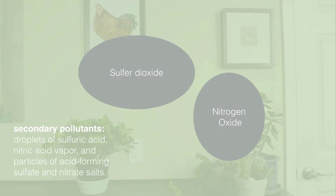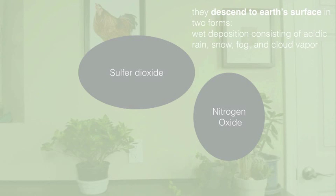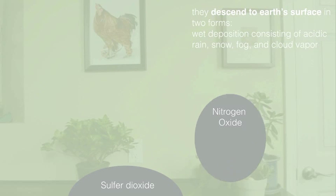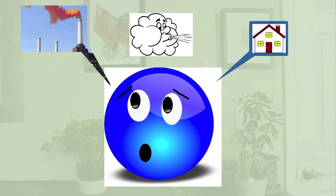During their trip, they form secondary pollutants such as droplets of sulfuric acid, nitric acid vapor, and particles of acid-forming sulfate and nitrate salts. Particles remain in the atmosphere for 2 to 14 days depending mostly on prevailing winds, precipitation, and other weather patterns. During this period, they reach Earth's surface in various forms — the wet deposition consisting of acidic rain, snow, fog, and cloud vapor. Acid deposition is a regional air pollution problem in areas that lie downwind from coal-burning facilities and in urban areas with large numbers of motor vehicles. Some areas in the eastern United States receive rain that is at least 10 times more acidic than natural precipitation.